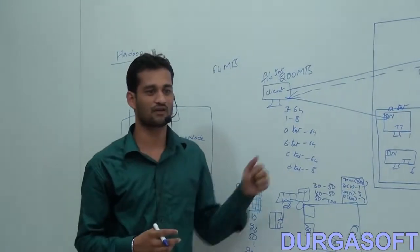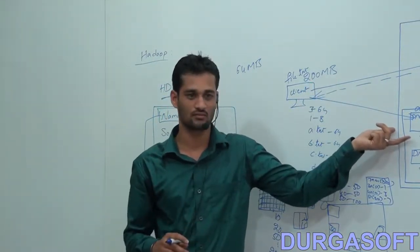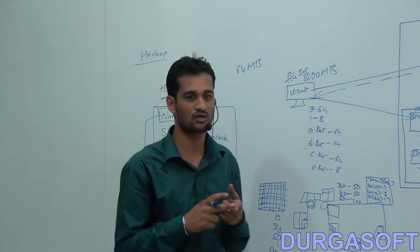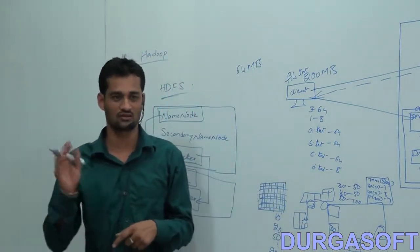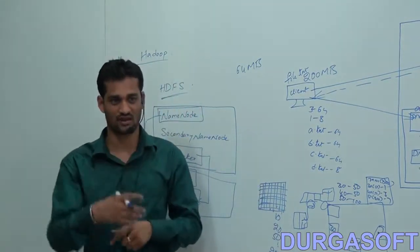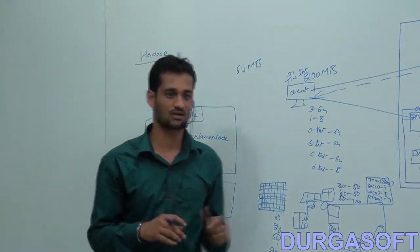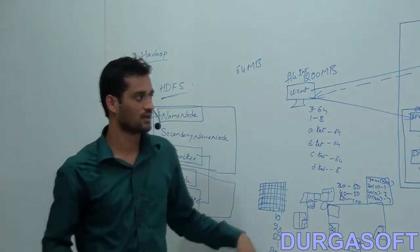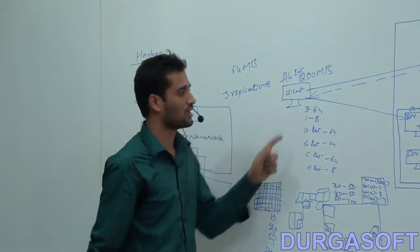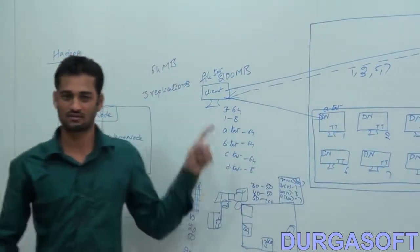For the Name Node to know where A.txt is stored, all data nodes send block reports and heartbeats to the Name Node at regular intervals. The block report tells the Name Node that a block has been stored in that data node. The heartbeat confirms that the data node is still alive and working properly.